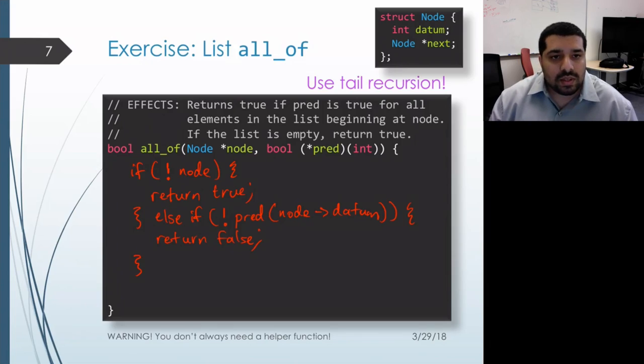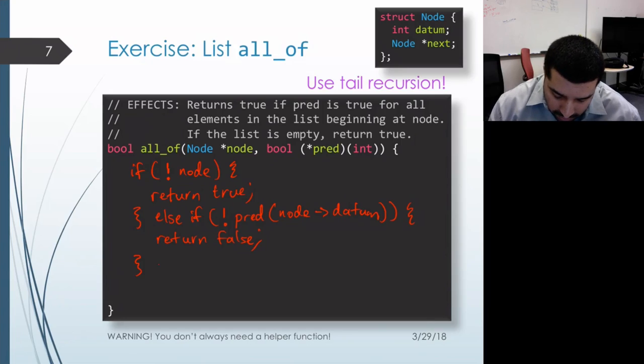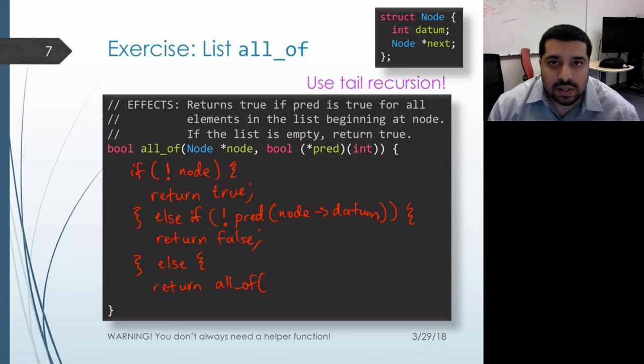The recursive case is when my first item does satisfy the predicate. Now what I have to do is check the remaining items in my list to see if they satisfy the predicate as well. I can do that with a recursive call. And all I have to do is pass the rest of the list to that recursive call.